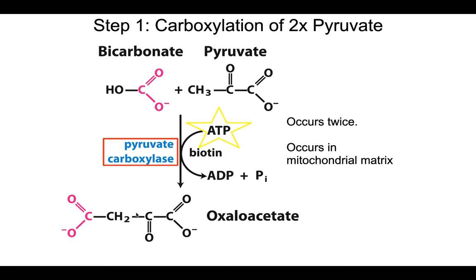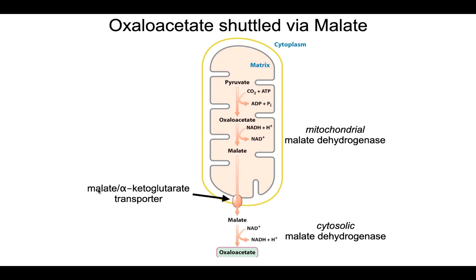We need to do this to two pyruvates, and it occurs in the mitochondrial matrix. The carboxyl group added is going to be the first thing to leave when we later convert oxaloacetate into phosphoenolpyruvate — it's just there to activate our pyruvate.